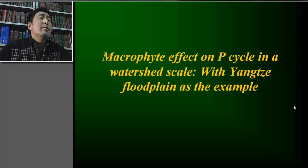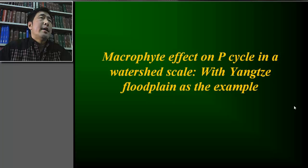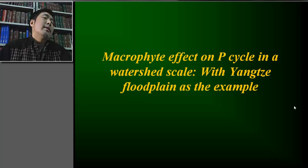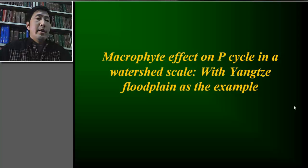In the former sections, we briefly summarized the current knowledge about the macrophyte effect on phosphorus dynamics. Here, in this section, I want to propose a hypothesis to describe the macrophyte effect on the phosphorus cycle at watershed scale. I am working in Wuhan, a large city near the Yangtze River, so I use the Yangtze River floodplain as the example.